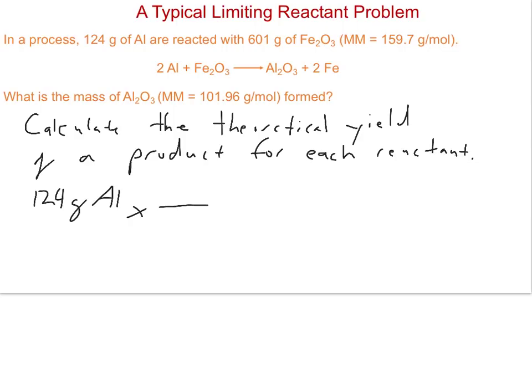From our periodic table, the molar mass of aluminum is 26.982 grams in one mole. At this point, grams of aluminum cancel and we're in moles of aluminum.